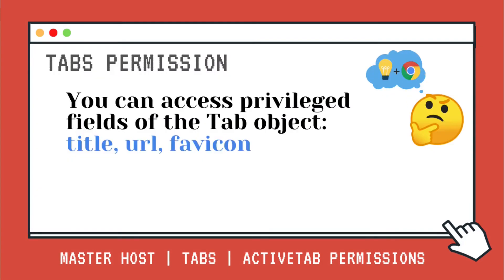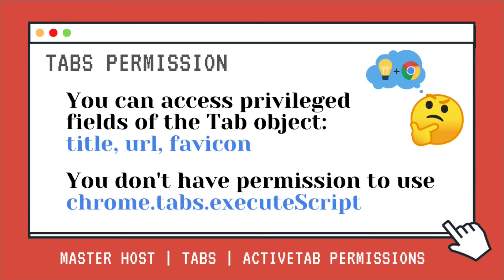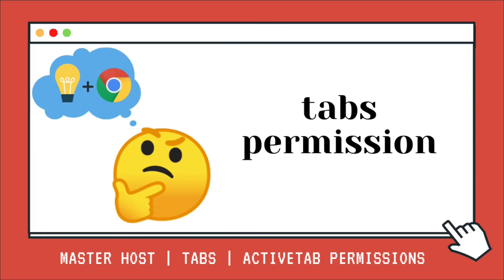To summarize the tabs permission: it gives us access to the title, the URL, and the favicon. But even though we have the tabs permission, we cannot use tabs.executeScript to inject code — we need either the active tab or host permission for that. I hope you learned a lot more about tabs. If you enjoyed the content, don't forget to like, subscribe, and leave any questions in the comments. Good luck with your Chrome extension — bye!